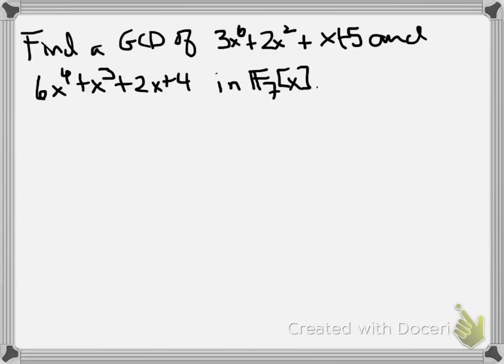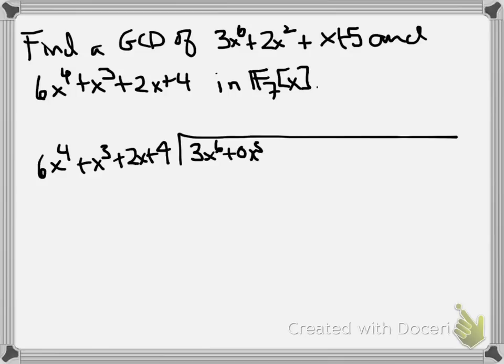Right, so that's polynomials with coefficients from the field with 7 elements or z mod 7z. One of these has smaller degree than the other, so we divide it into the one with bigger degree, and it sets up just like this.